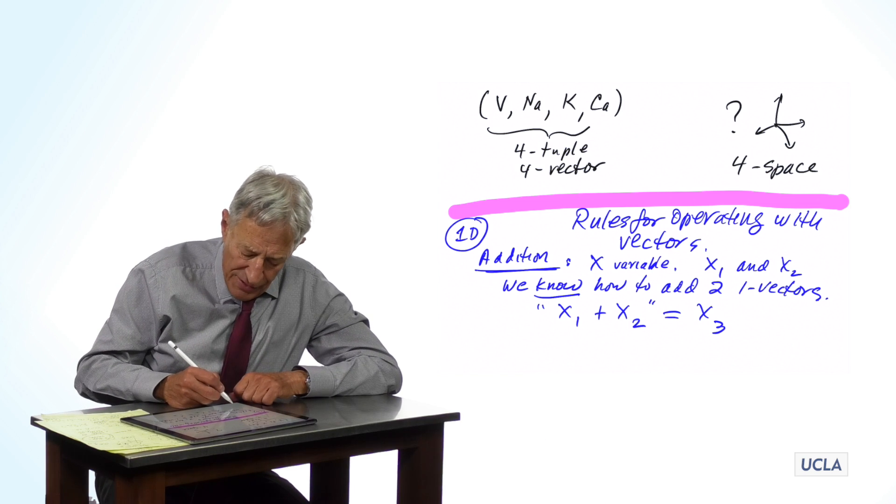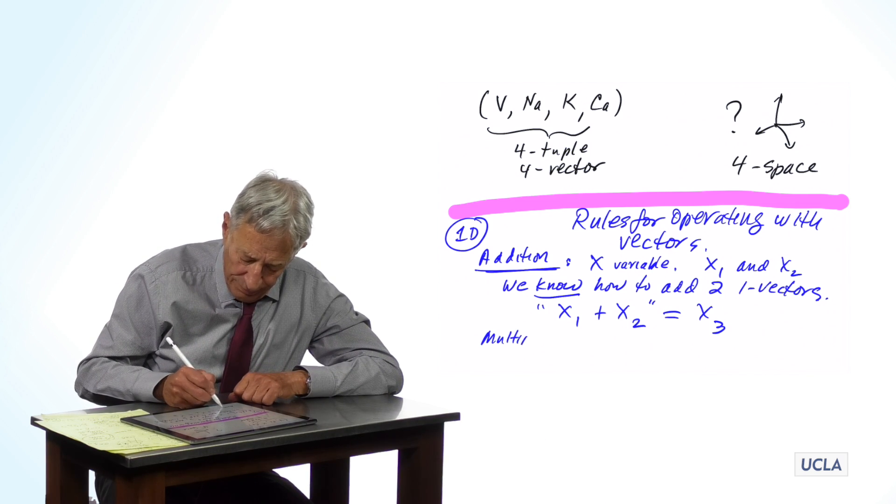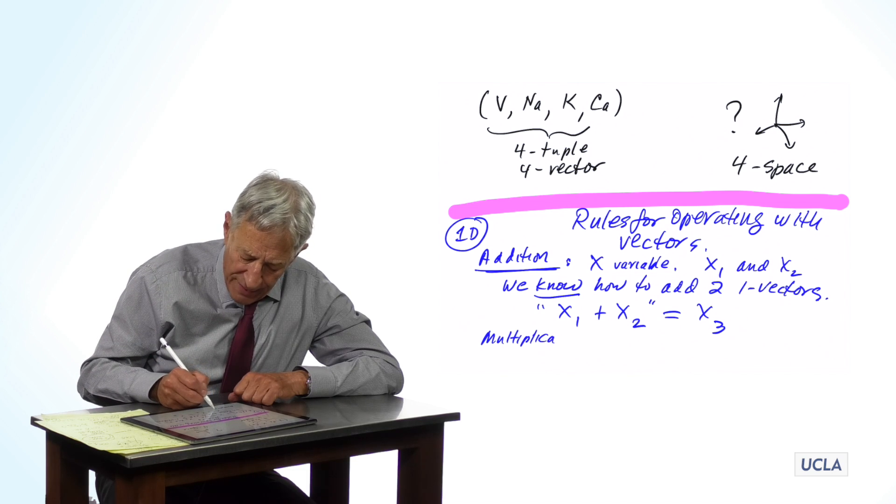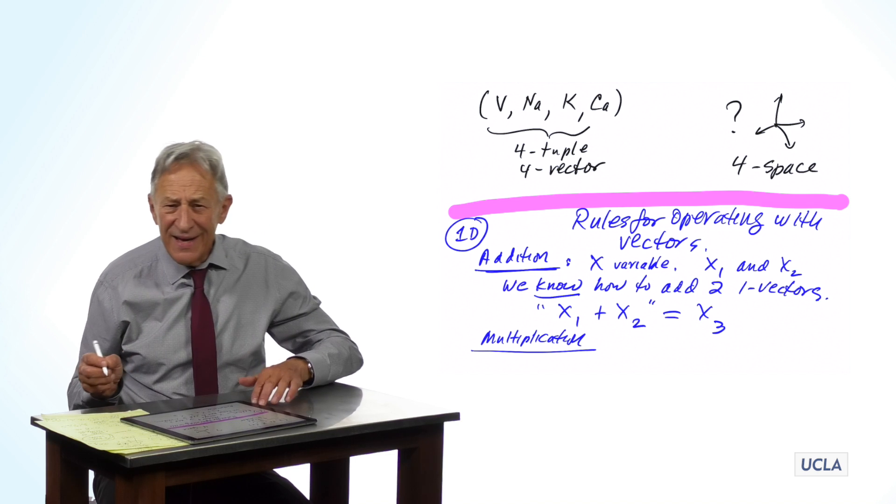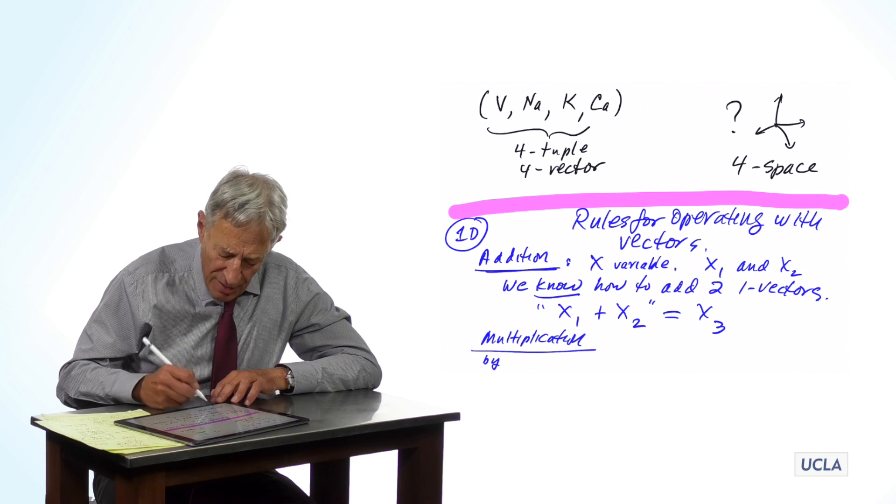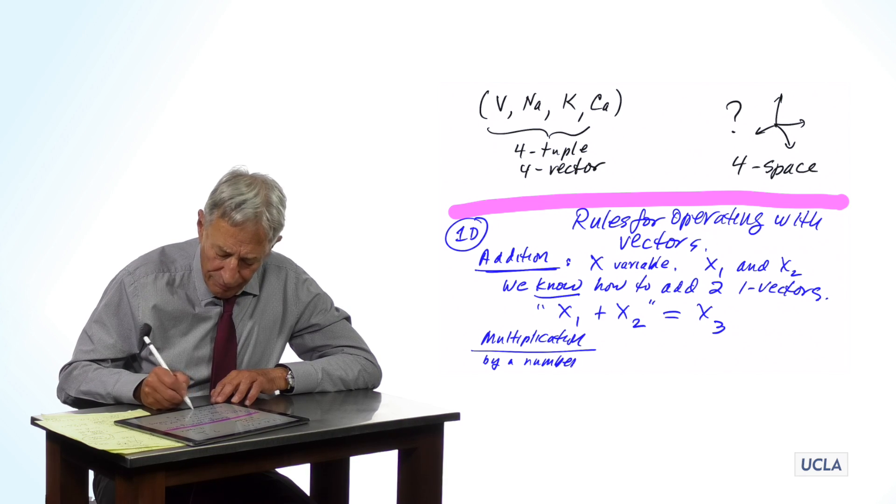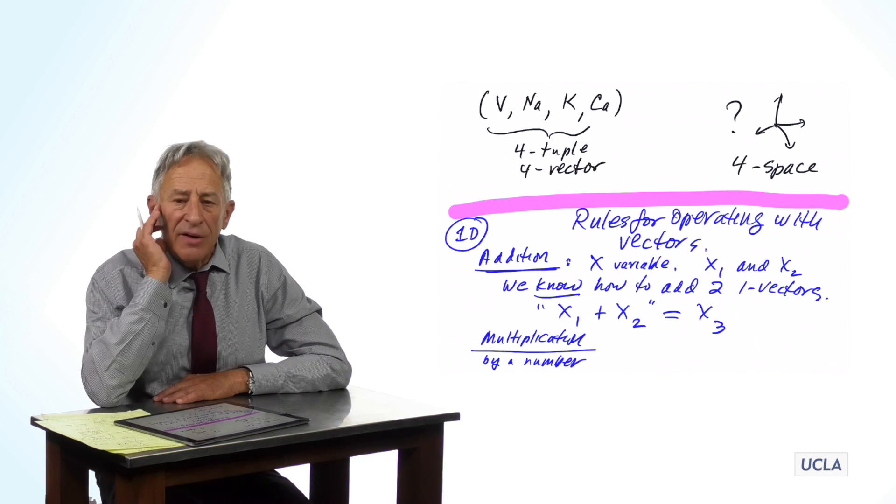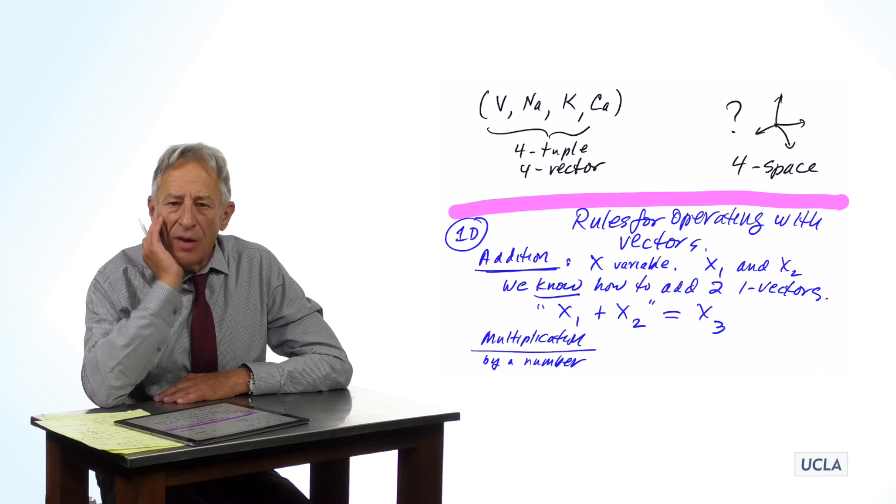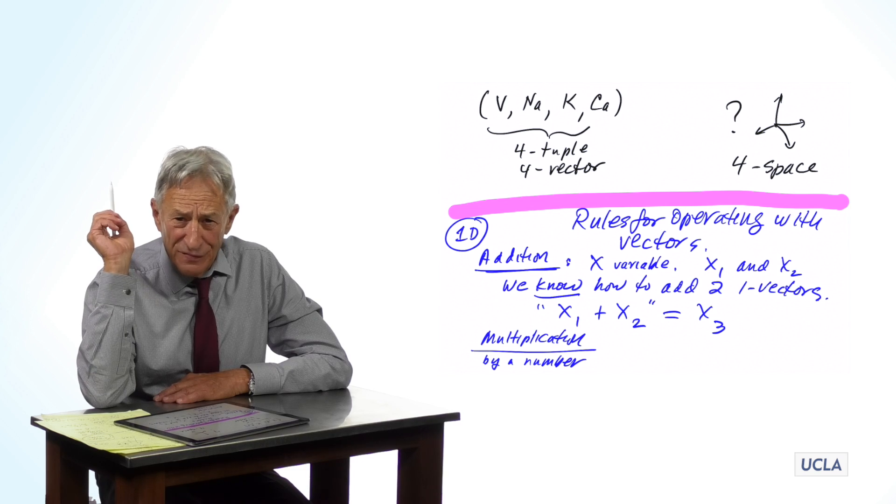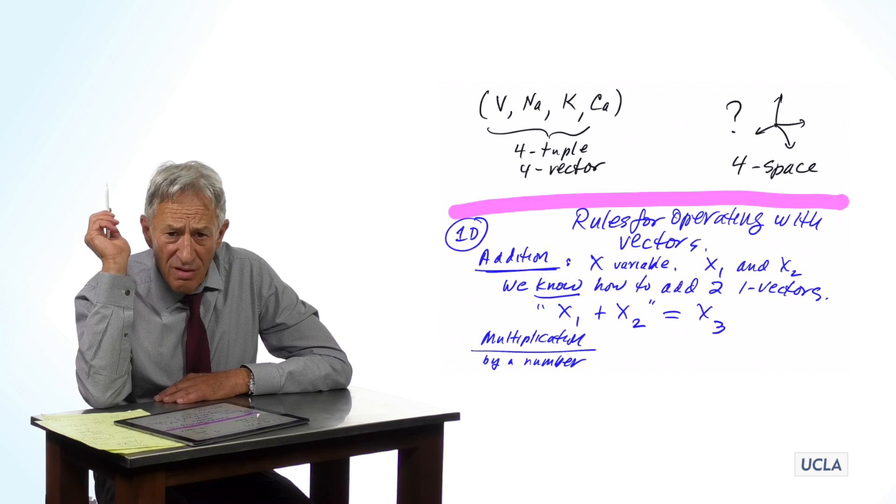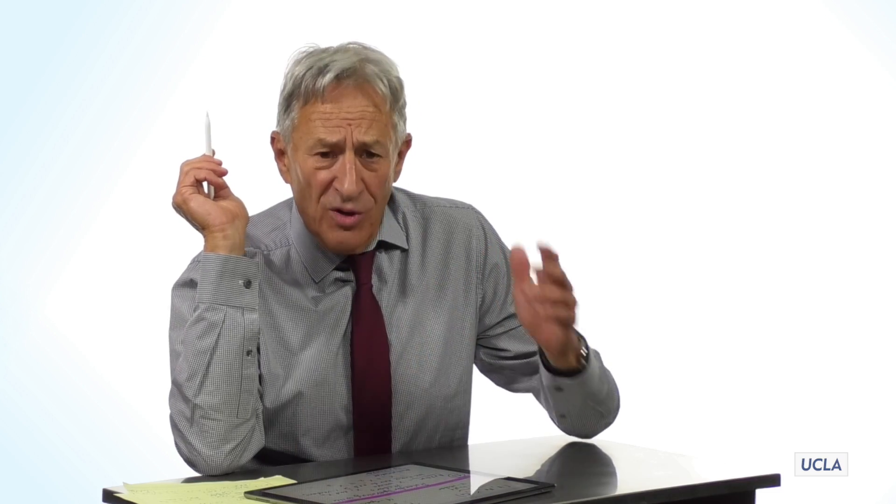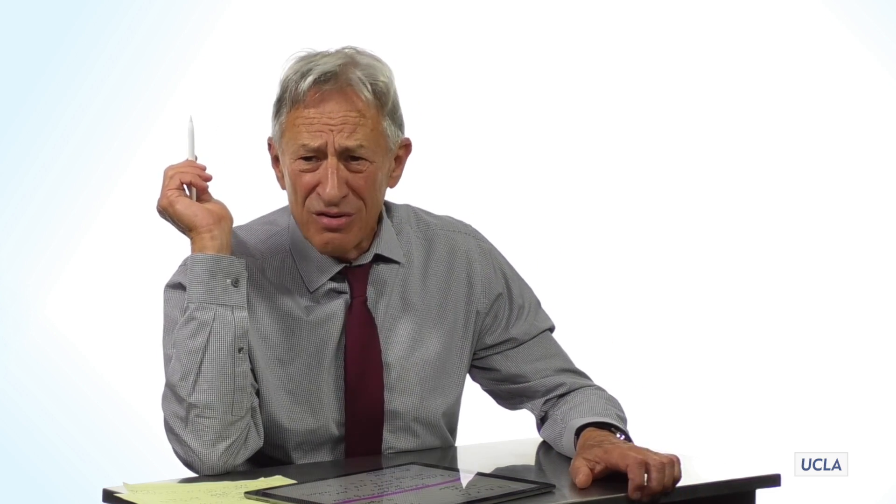The second rule is called multiplication. And when I say multiplication, I'm going to add something. I'm going to say multiplication by a number. Because we do not know and we do not define the product or the multiplication of two vectors. We have no idea what that means. If x1 is a temperature and x2 is a temperature, what is the product of two temperatures? I have no idea. So, we don't, in general, multiply vectors.